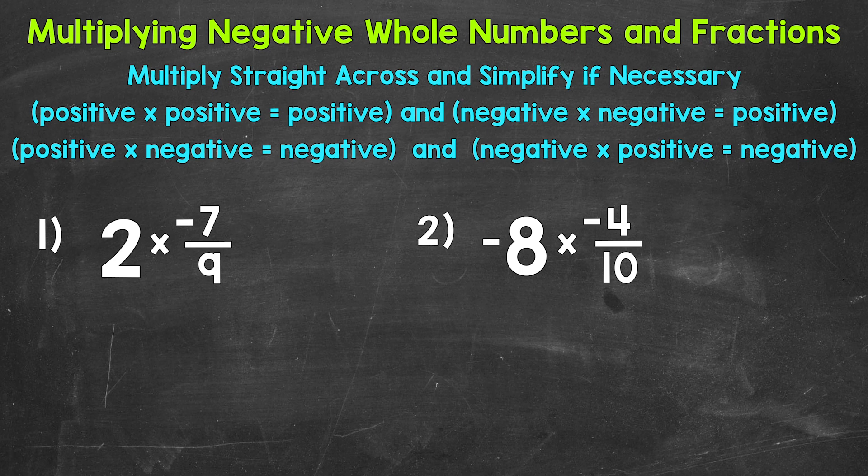Multiplying different signs will equal a negative result — meaning positive times a negative, or negative times a positive, will give us a negative result. On the other hand, if we multiply the same signs we will get a positive result, meaning positive times positive or negative times negative.